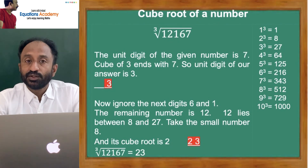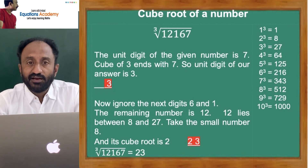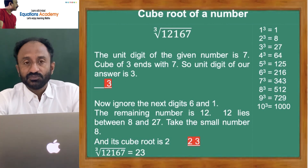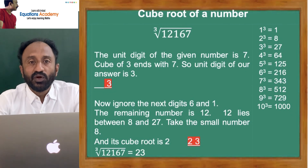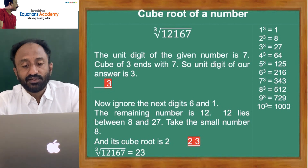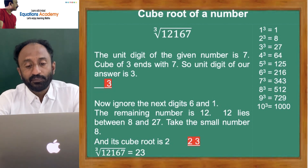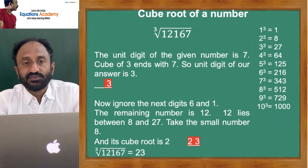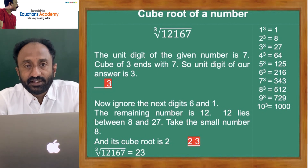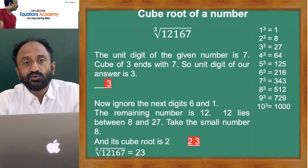One more example: cube root of 12,167. Take the last digit — that is 7. Check the number whose cube ends with 7: 3 cube is 27. So we put 3 as the units place of our answer. Now ignore the next two digits, 6 and 1. What is remaining? 12. We know that 12 lies between 8 and 27, meaning 12 lies between the cubes of 2 and 3. Between 2 and 3, choose the smaller number — 2. So the answer is 23. Cube root of 12,167 is equal to 23.